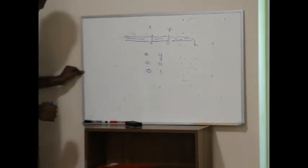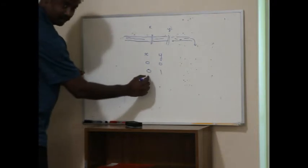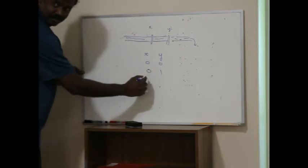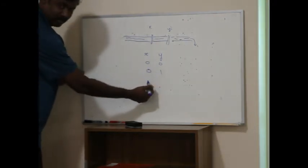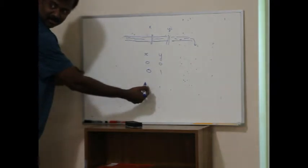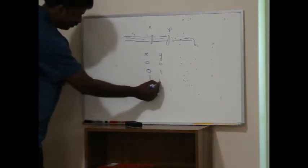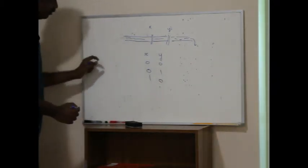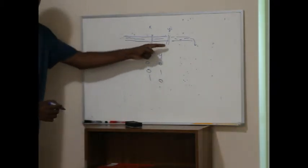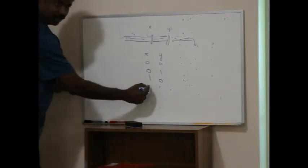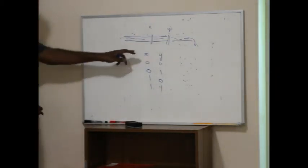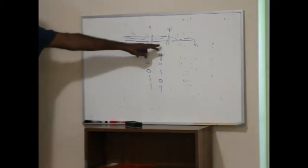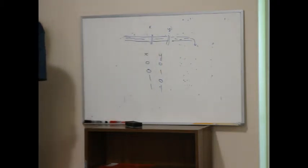I can have X as closed, Y as open. Or X is open, Y is closed. So the combinations are: 0,0 — 0,1 — 1,0 — and then 1,1. Which means if I have two gates, I have four combinations. If I have more gates, I have more combinations.